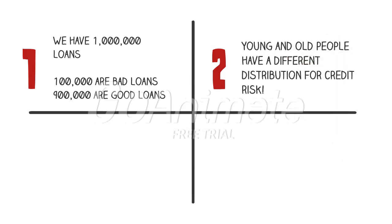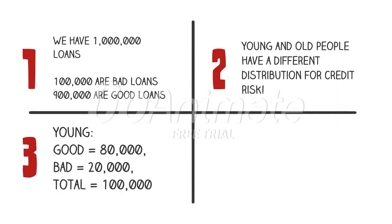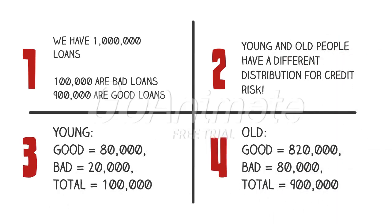Let us get back to our example. We have one million loans and 10% of them are bad. But young people have a very different distribution for credit risk compared to old people, so maybe we should split these up. Two out of ten young people's loans are performing bad right now, but over 91% of the loans given to elderly people are performing good.